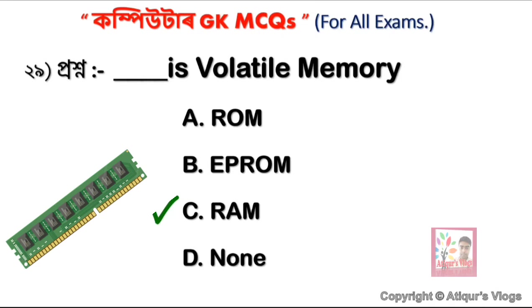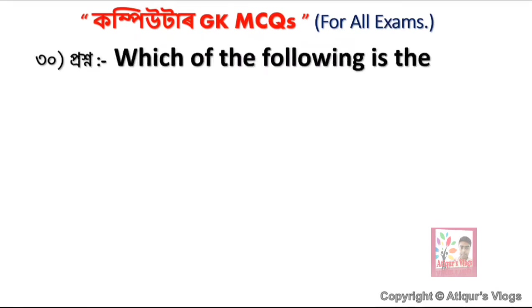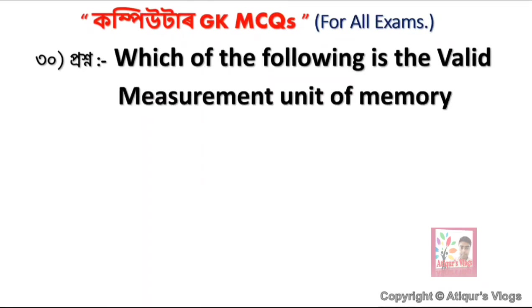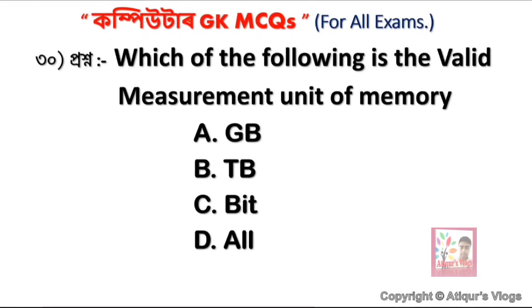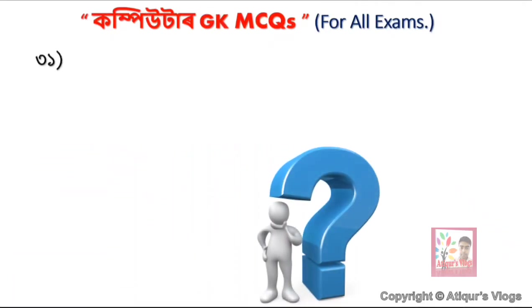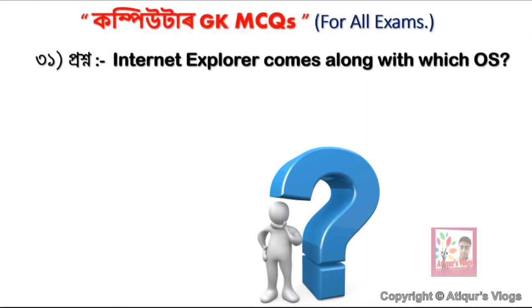Question 33: Which of the following is the valid measurement unit of memory? Computer memory units include Bit, Byte, KB, and others. The smallest unit of computer memory is Bit, and this covers the valid memory measurement units.